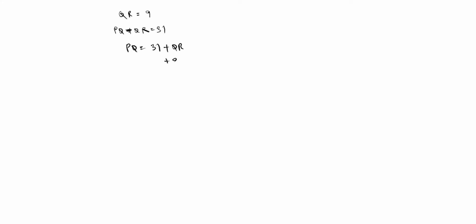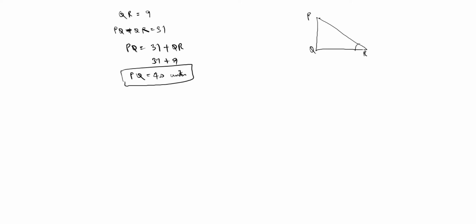PQ minus QR equals 31, and we wrote PQ equals 31 plus QR. Now QR equals 9, so PQ equals 31 plus 9 equals 40 units. So we draw the triangle with PQ equal to 40, PR equal to 41, and QR equal to 9.